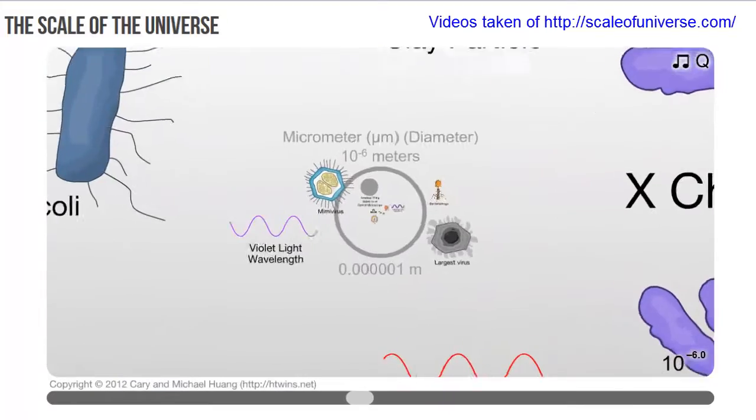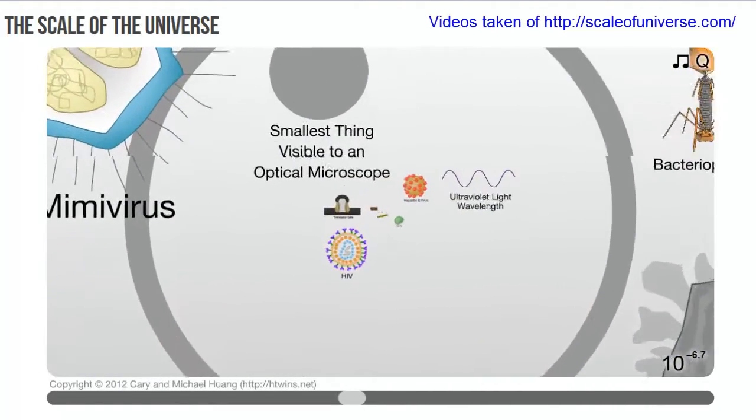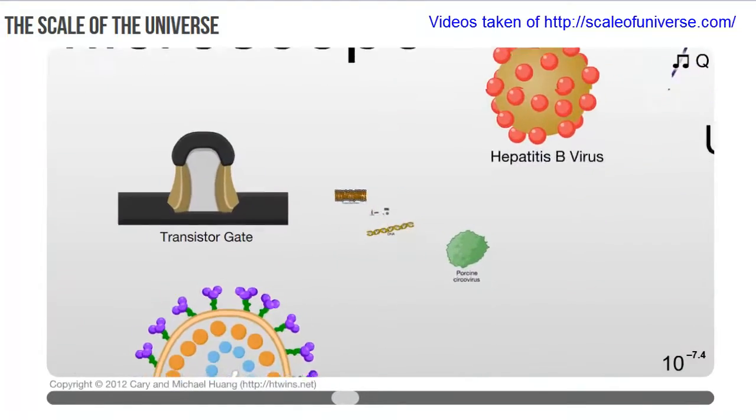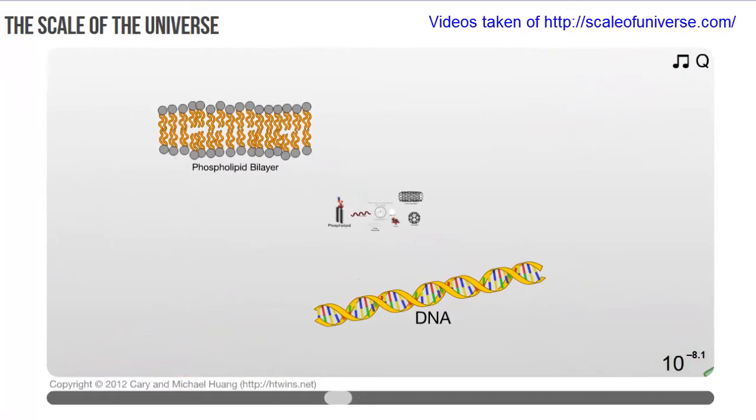If we zoom in even further, we start to see things like viruses. If we zoom in even further, we eventually start to see macromolecules like DNA or a phospholipid bilayer.